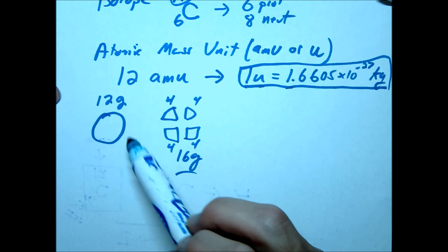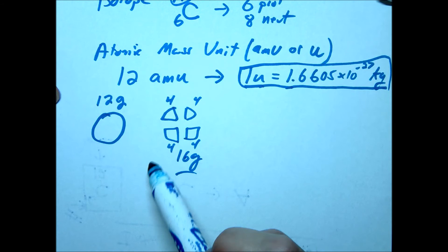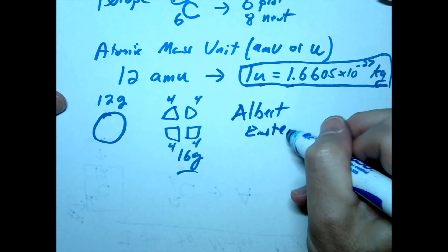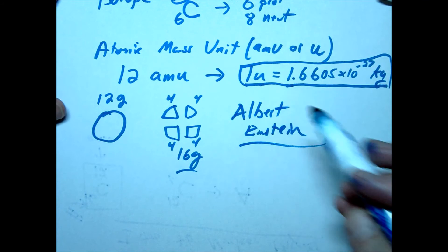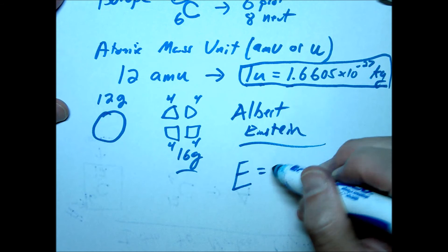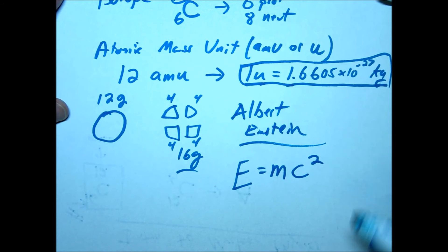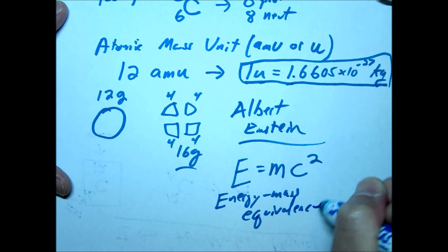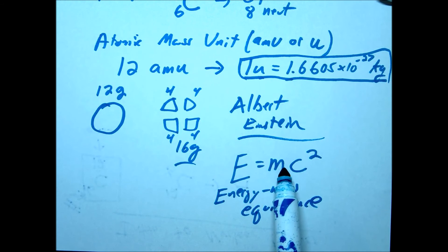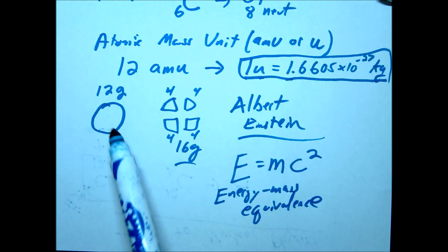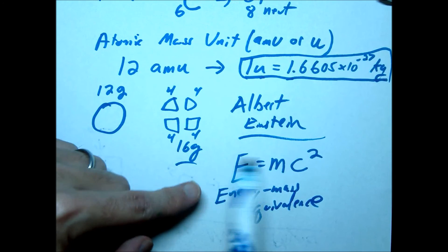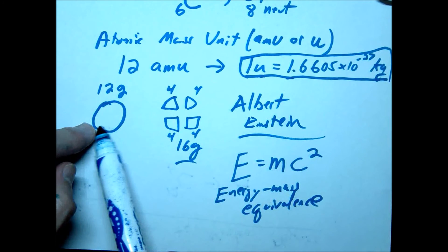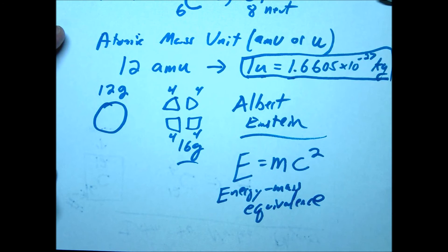So what do you do when you have a conundrum like this in the 20th century? You call Albert Einstein. Einstein comes along and solves this mass conundrum. He derived the famous equation — you've surely seen it before — E equals mc squared. We sometimes write this as the energy-mass equivalence. Einstein basically said that energy can become mass, or mass can become energy. So if we started with 12 grams and ended with 16 grams, you had to input a certain amount of energy, calculated using E equals mc squared.